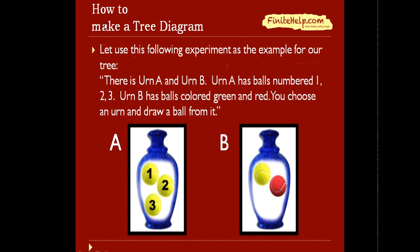So you're going to learn how to make a tree diagram, and we're going to use this following experiment as an example. Let's say there's urn A and urn B. Urn A has the ball number 1, 2, and 3. And urn B has ball colored green and red. You're going to first choose an urn and then draw a ball from it.